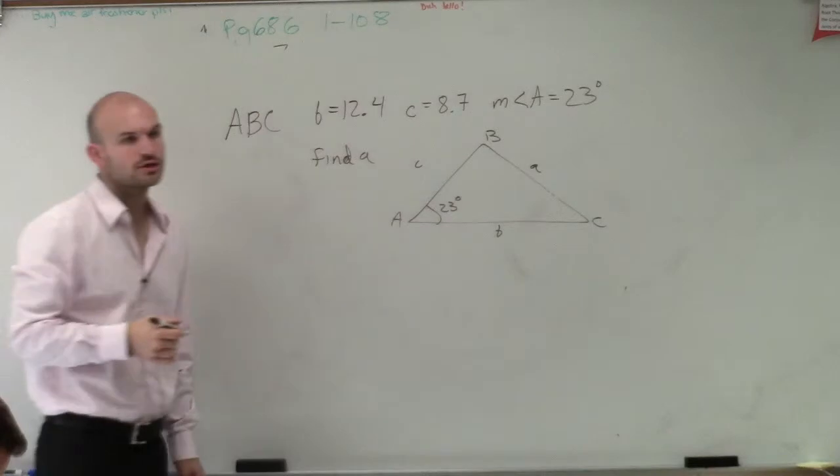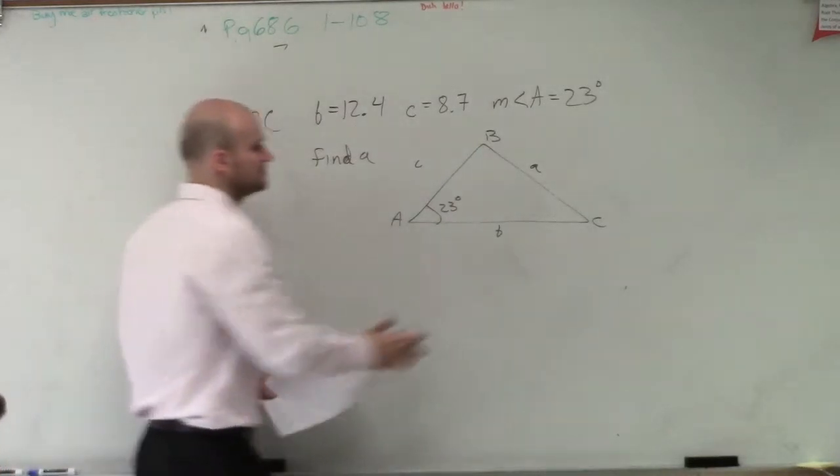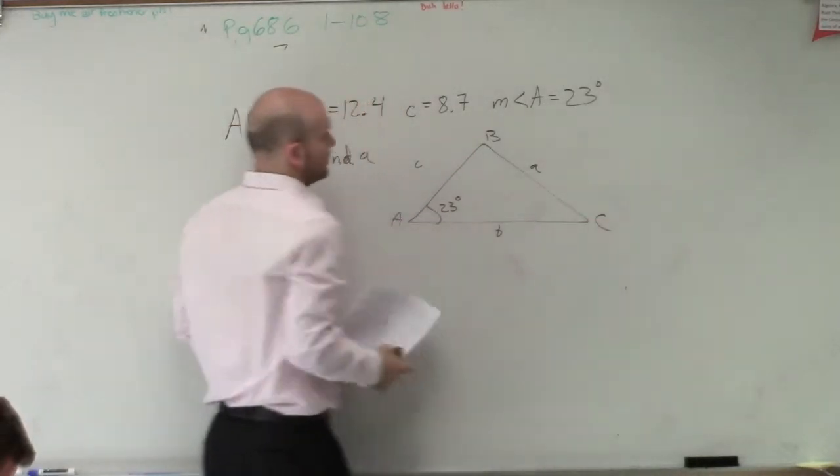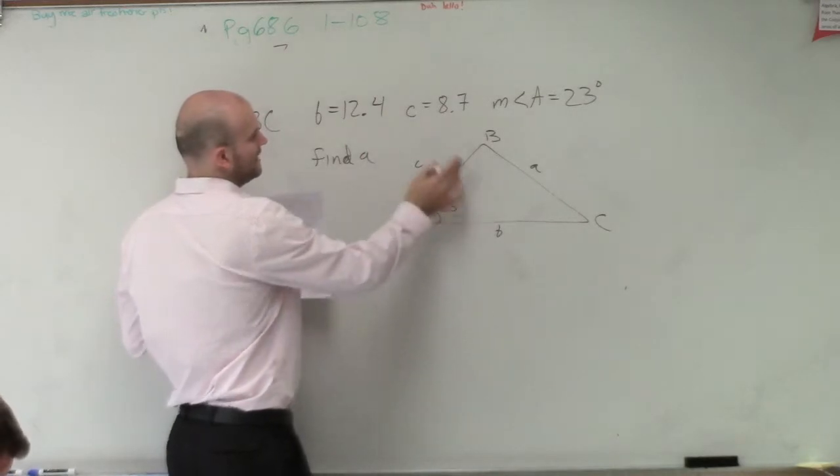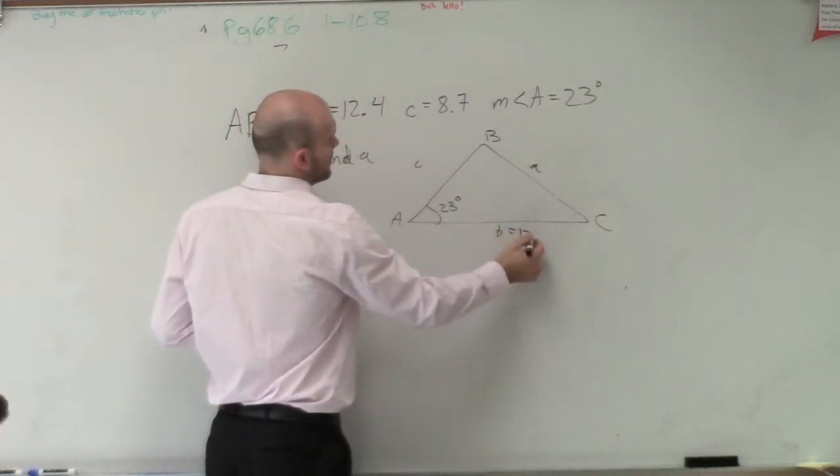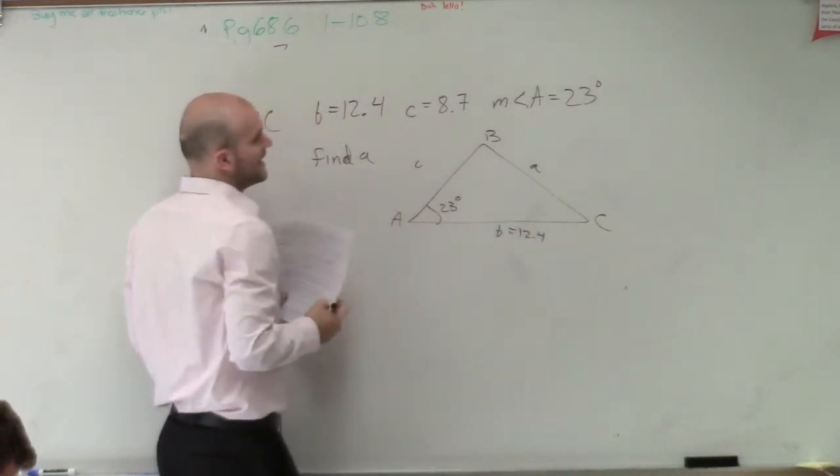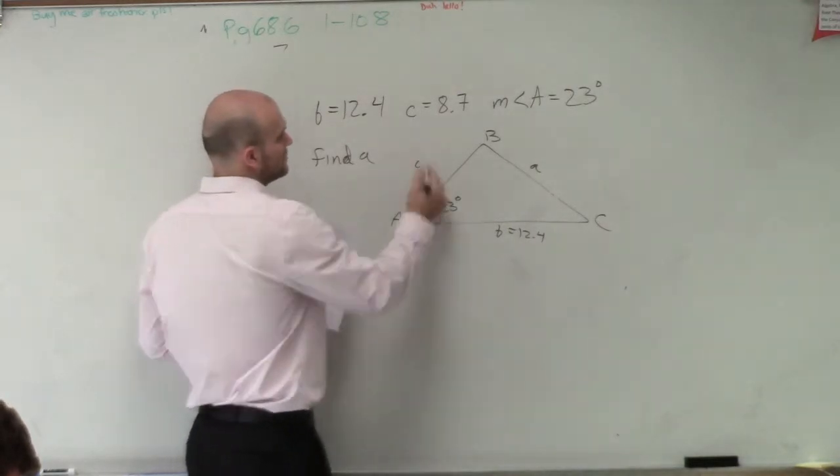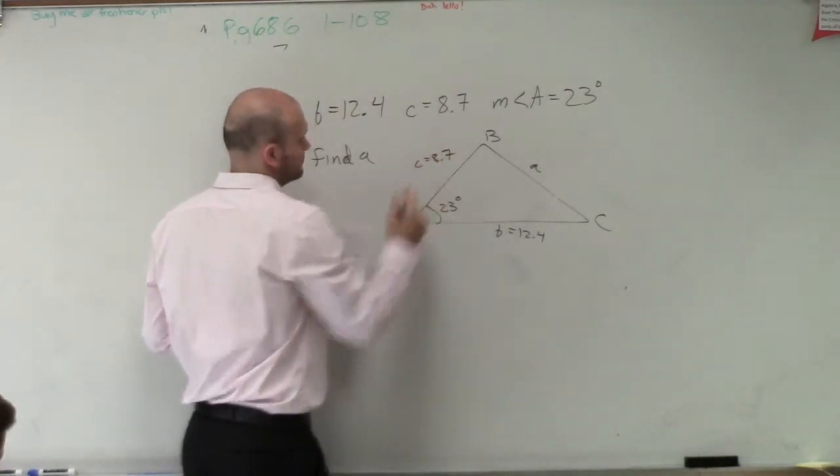Remember, the lowercase a, b, and c are always opposite of their angle, right? So we have b equals 12.4 and c equals 8.7.